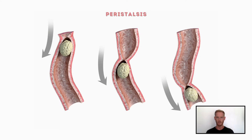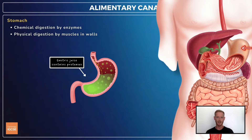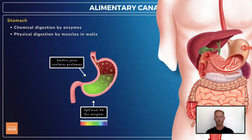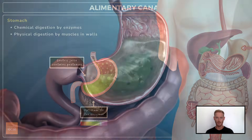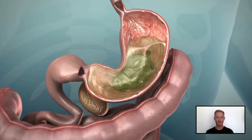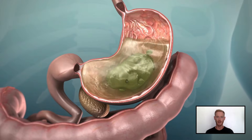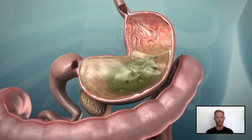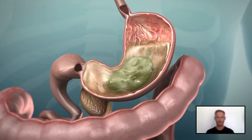The stomach has glands in its lining that secrete gastric juice containing protein-digesting enzymes called proteases. The lining also releases hydrochloric acid that helps to maintain optimum pH conditions for the enzymes, and kill harmful organisms like bacteria. The muscular walls of the stomach contract, squeezing and churning food to help liquefy it in preparation for the next stage.